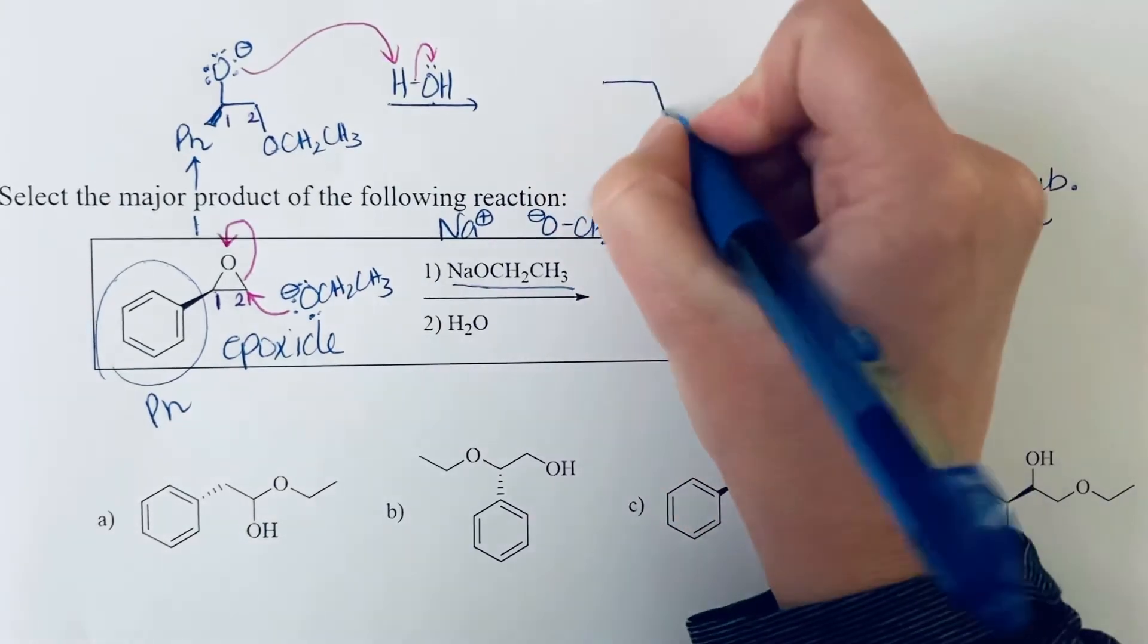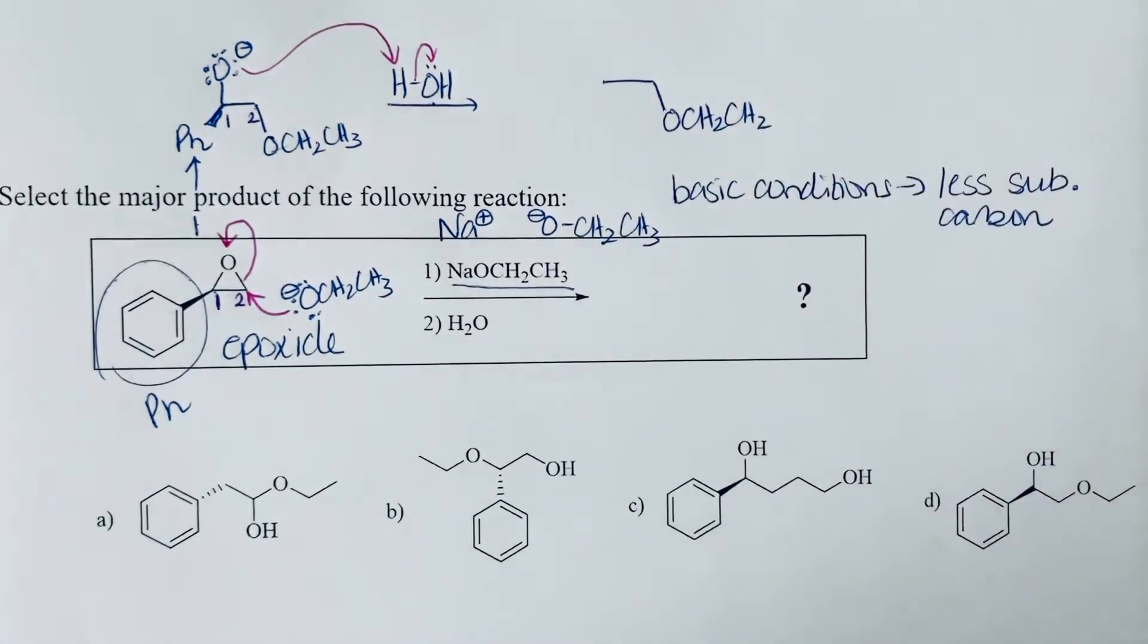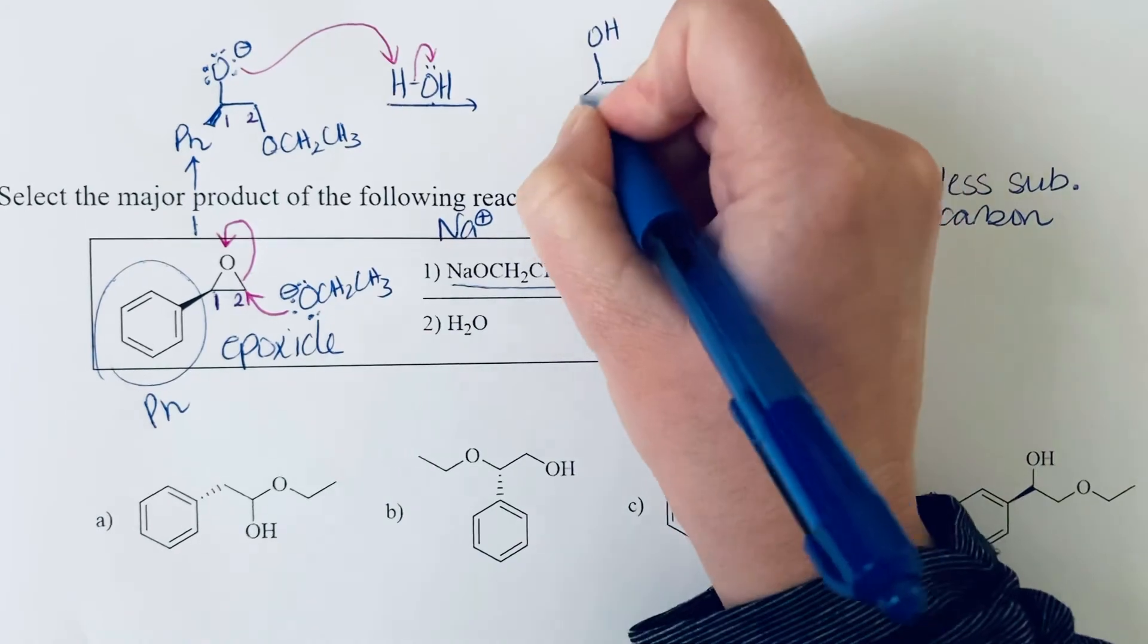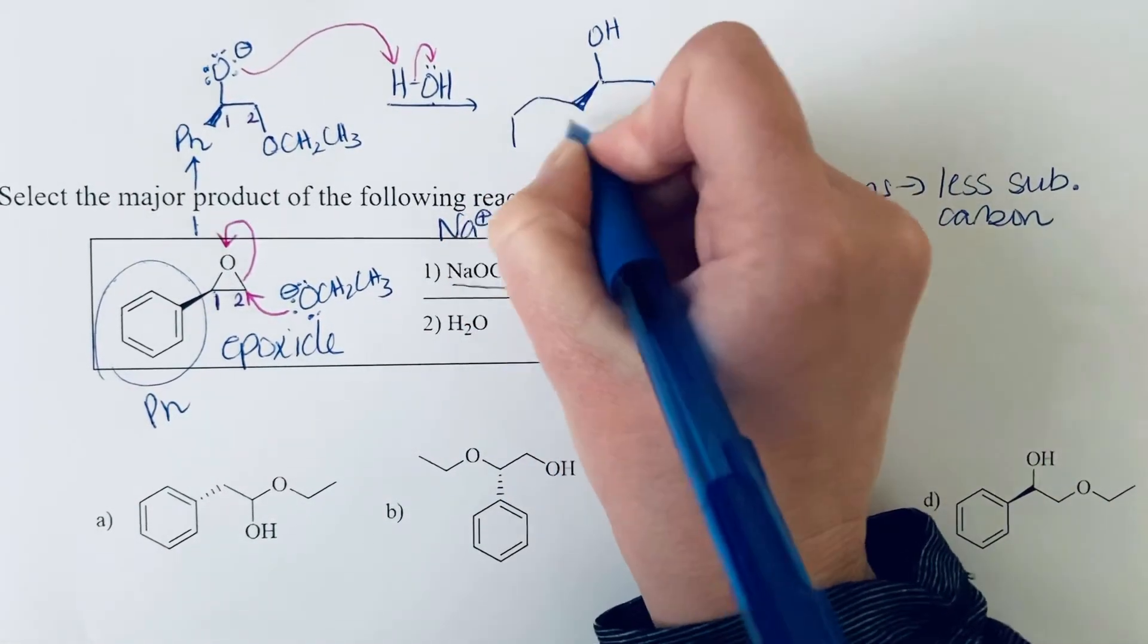We will see as our product that we've got that ethyl chain still attached to carbon number two, the alcohol on carbon number one, and then we still have that wedged bond to the benzene ring.